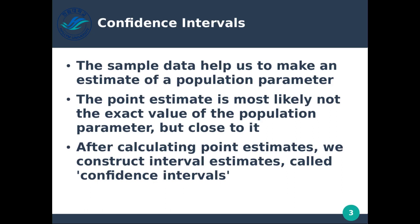After calculating point estimates, we construct interval estimates called confidence intervals. Once we've analyzed our sample and made some estimate — for example, the mean of our sample — we want to say how close is this mean to the overall population. We can construct confidence intervals to say we are confident that our point estimate is within a certain range of the true mean or the true parameter we're trying to calculate.